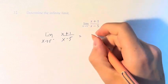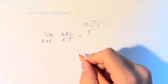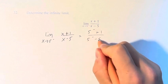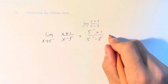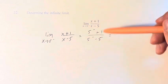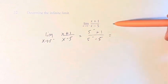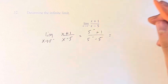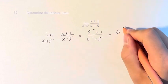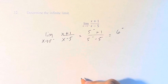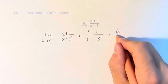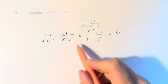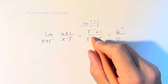So plugging this value in, we get (5 from the left + 1) over (5 from the left − 5). What does this actually mean? Well, 5 plus 1 is 6, and we're approaching 6 from the left. And 5 from the left minus 5: 5 minus 5 is 0, which means we're approaching 0 from the left.